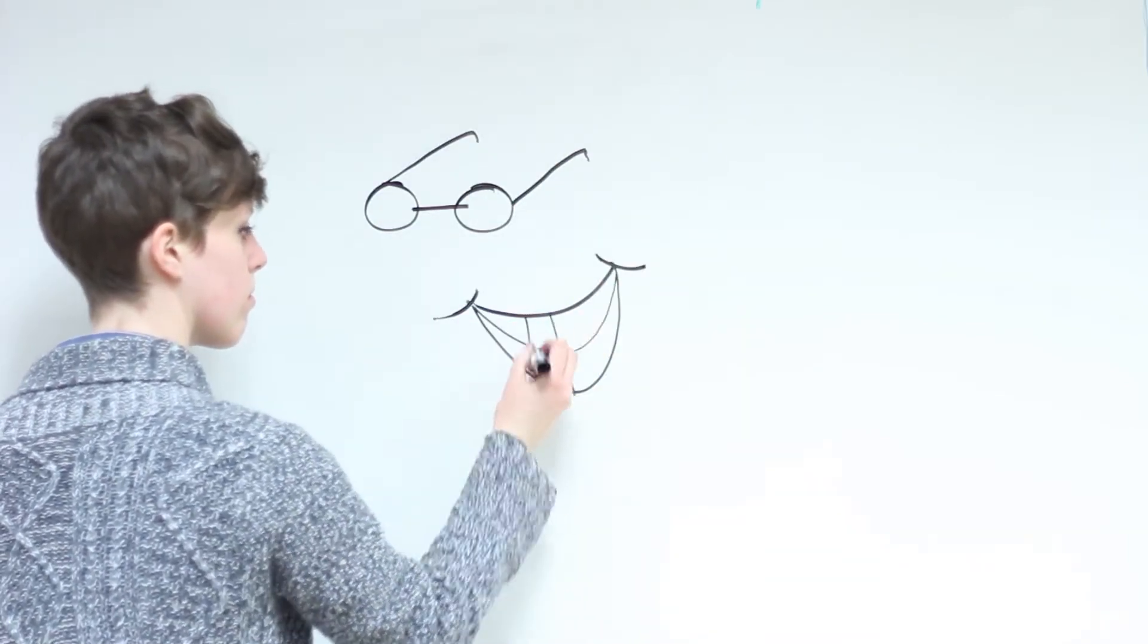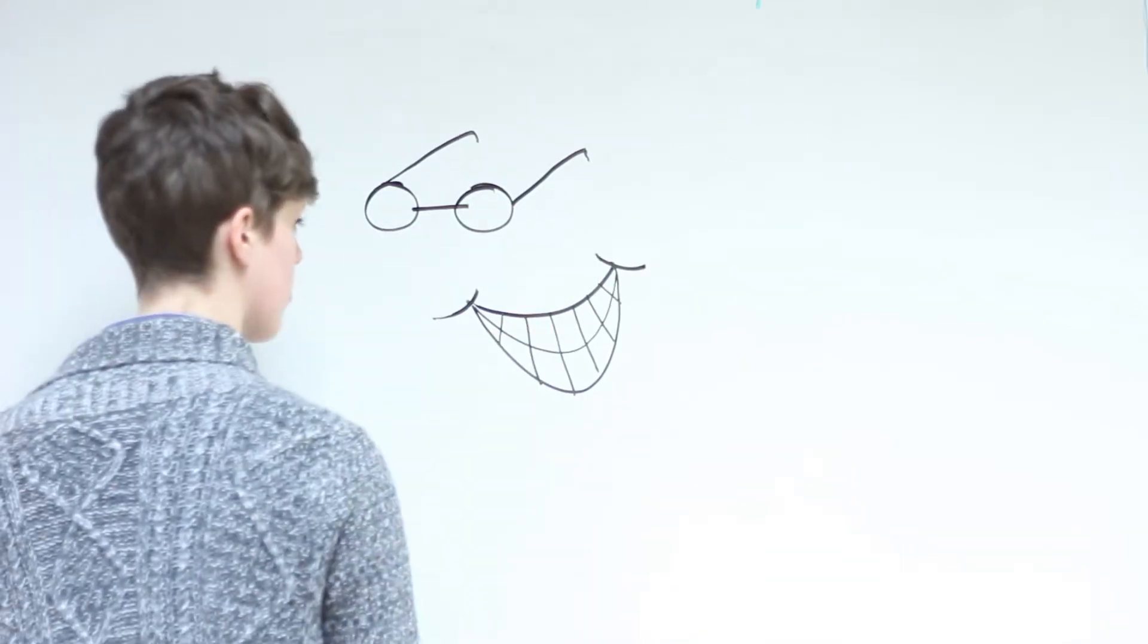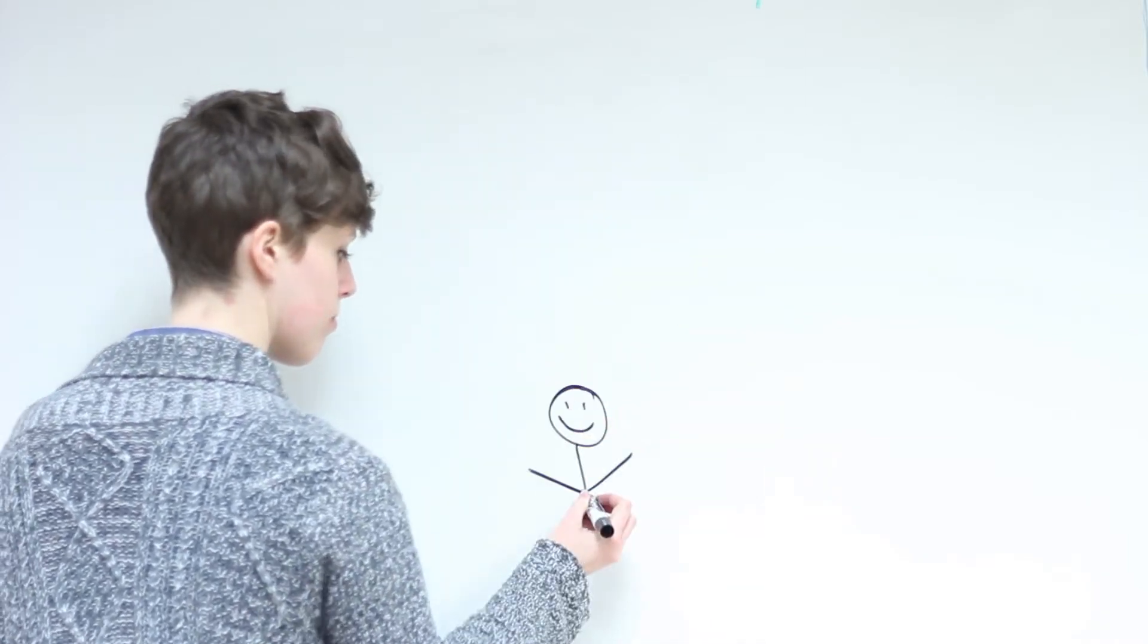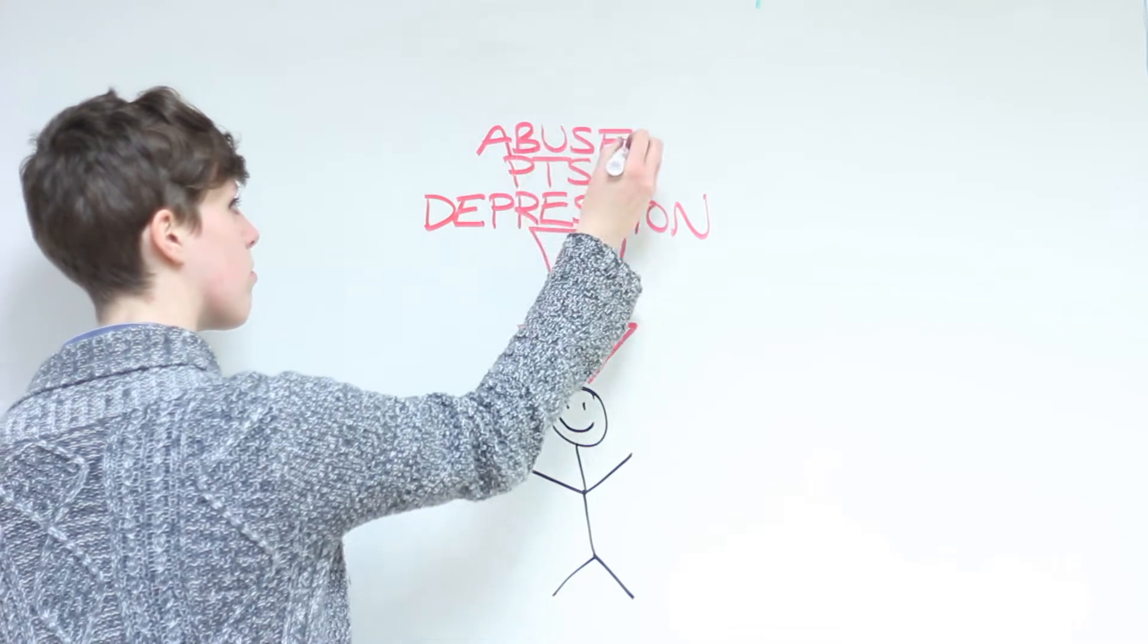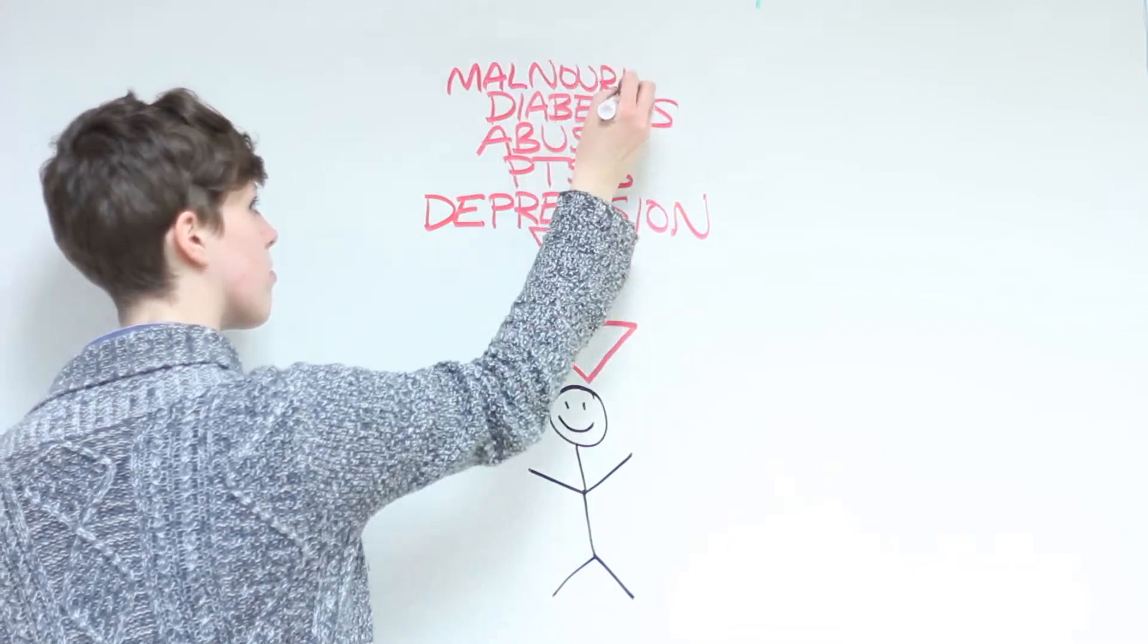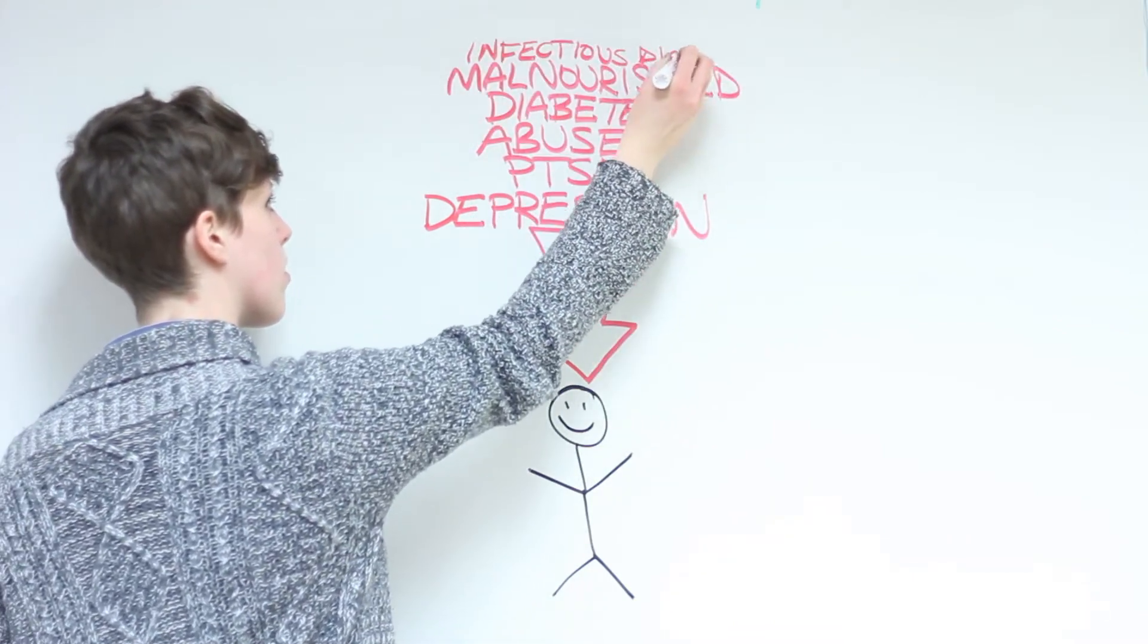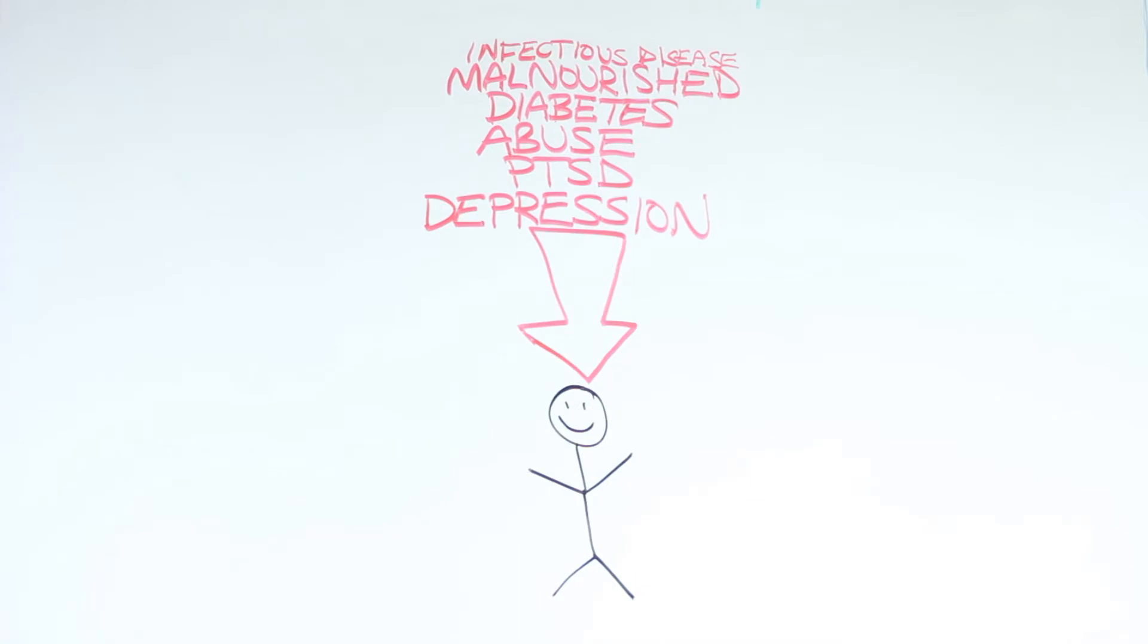Emergency dental and vision benefits were also taken away from most refugees. Refugees arriving to Canada from unsafe countries are at risk of depression, post-traumatic stress disorder, abuse, diabetes, malnourishment and infectious diseases as well as many other health problems.